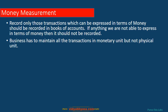The next concept is the Money Measurement Concept. According to this concept, we need to record only those transactions which can be expressed in terms of money. Any transaction that can be expressed in monetary terms should be recorded in the books of account; if it cannot be expressed in money, it should not be recorded. Examples include purchase of goods, sale of goods, payment of expenses, and receipt of income. There are two aspects: first, we must record all transactions expressible in money; second, all transactions must be maintained in monetary units.